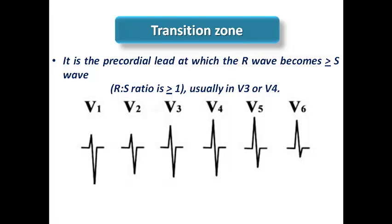We start with the transition zone. The transition zone is the precordial lead at which the R-wave becomes more than or equal to the S-wave amplitude. So it is the precordial lead in which the R-S ratio is more than or equal to 1. Normally it should be at V3 or V4 — in most normal conditions you will find the transition zone in one of these two leads.